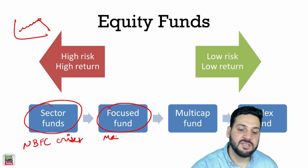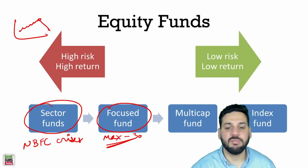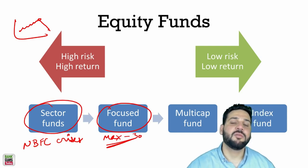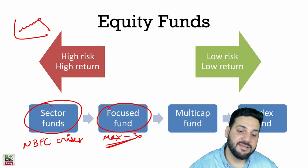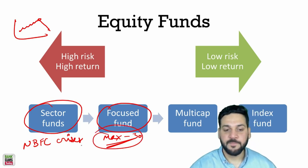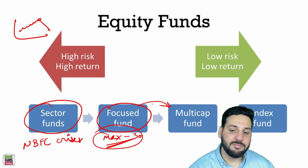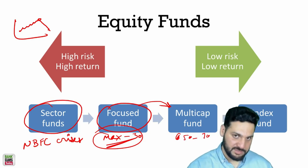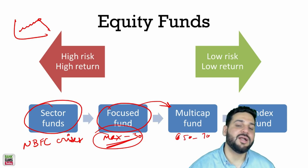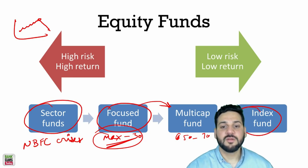Next are focused funds, where the fund manager can invest in at most 30 companies. You don't get the full benefit of diversification. Multi-cap funds invest in 70–80 stocks, making them less risky than focused funds. In multi-cap funds, money is generally invested in 50–60–70 stocks, so you get the advantage of diversification, making them less risky than focused funds.